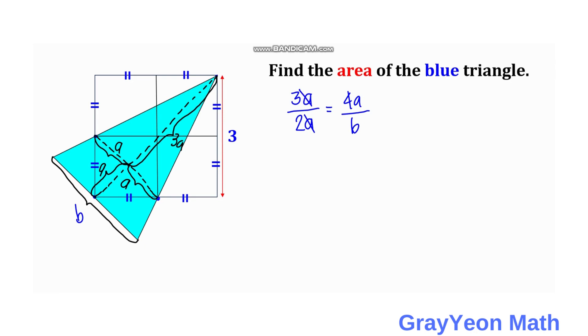...and by cross-multiplying we have b is equal to 4a times 2 over 3, so we have b is equal to 8 over 3a.